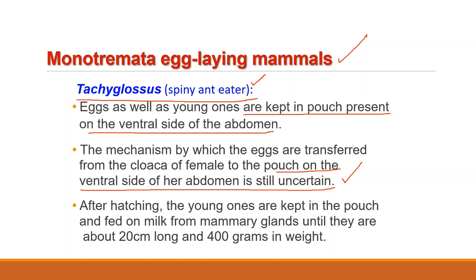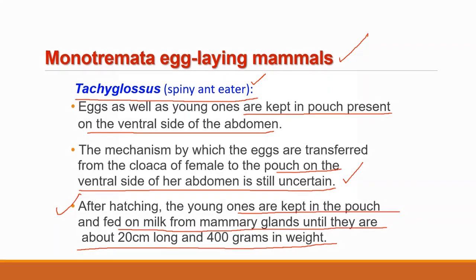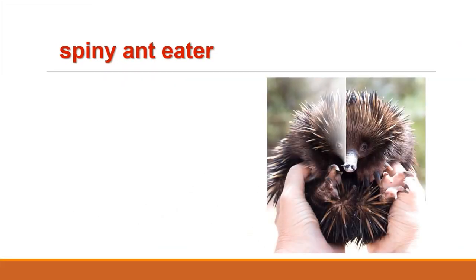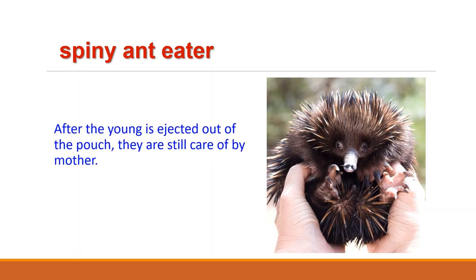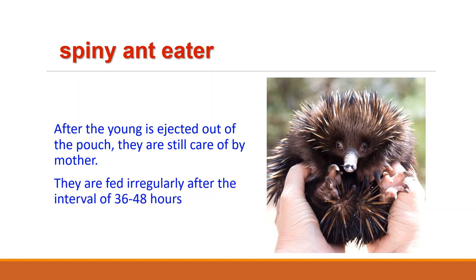After hatching, the young ones are kept in the pouch and fed on milk from the mammary glands until they are about 20 cm long and 400 g in weight. After the young ones are ejected out of the pouch, they are still taken care of by the mother. Young ones are fed irregularly and the interval between two meals is sometimes as long as 36 to 48 hours.